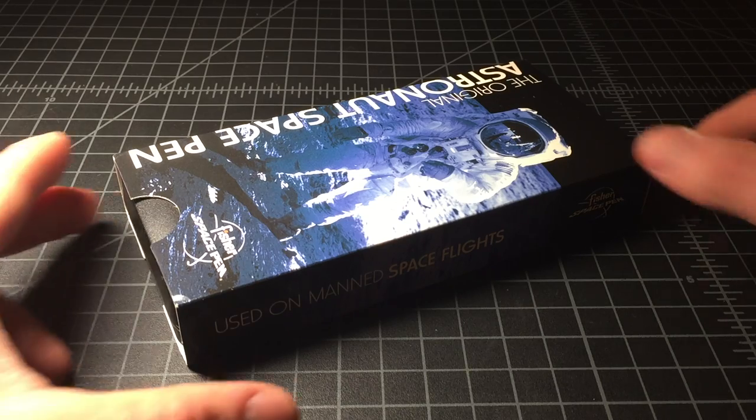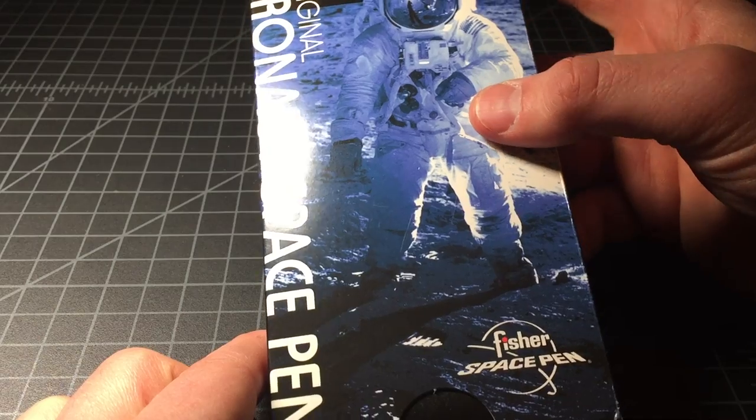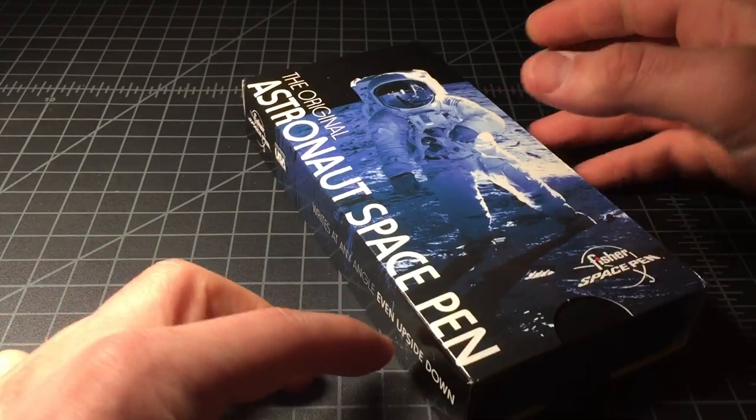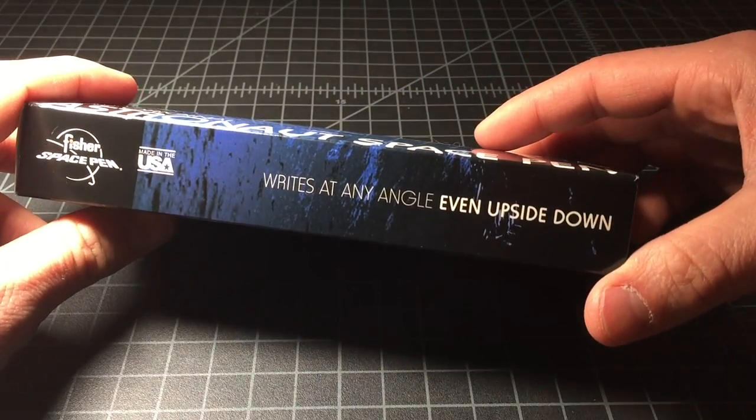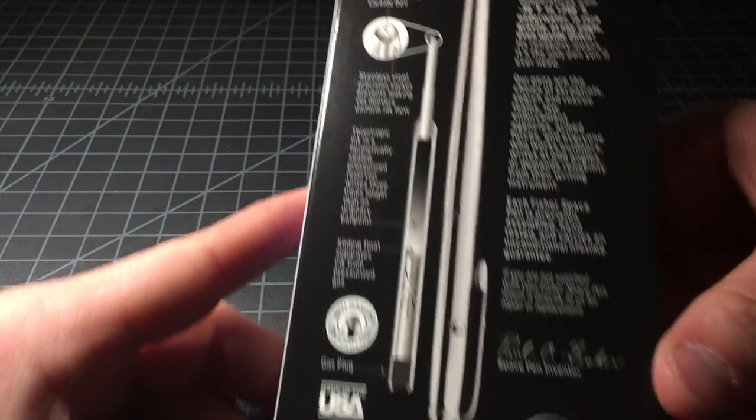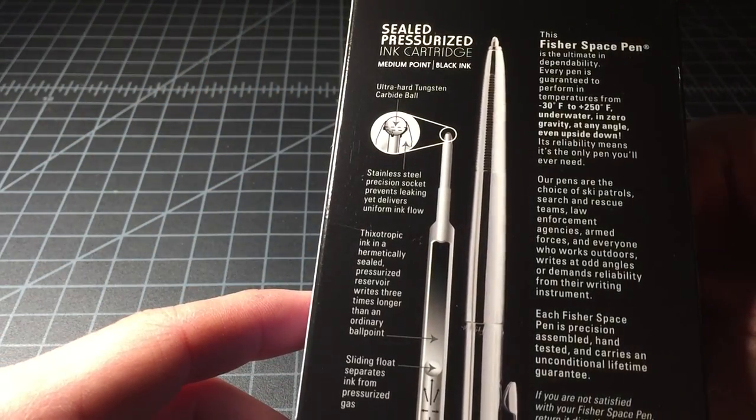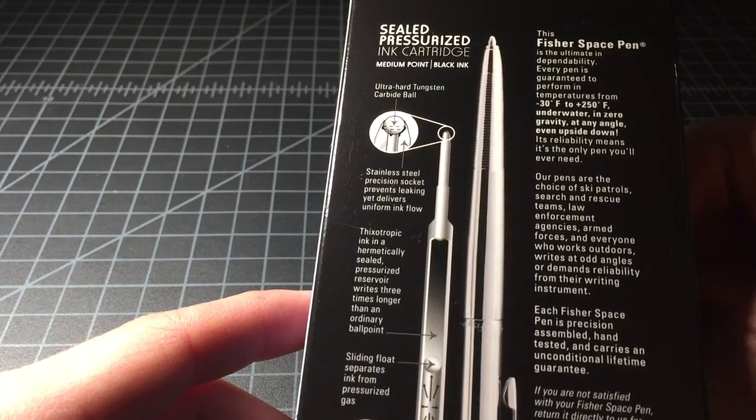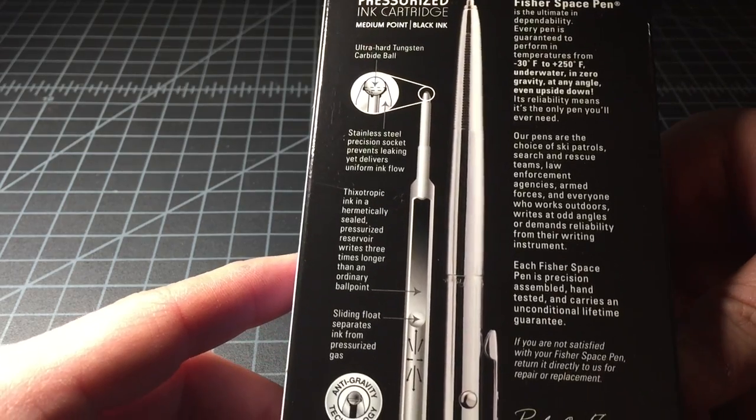But finally I broke down and picked up this classic AG7 Space Pen. This is the astronaut pen still made today. It's called the AG7 and this is sort of the most classic of the Fisher pens.